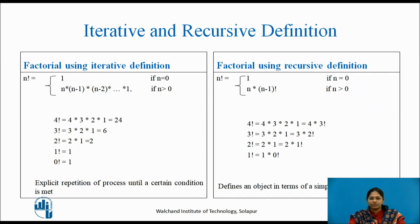Let us see the factorial using recursive definition. n factorial is equal to 1 if n is equal to 0, and if n is greater than 0, then n is multiplied to (n minus 1) factorial. For example, 4 factorial is calculated as 4 into 3 factorial; 3 factorial equals 3 into 2 factorial; 2 factorial equals 2 into 1 factorial; and 1 factorial equals 1 into 0 factorial. A recursive definition defines an object in terms of a simpler case of itself.